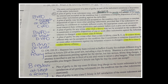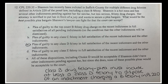Shannon has been recently indicted in Suffolk for multiple drug felonies under Article 220 of the Penal Law, including a class B felony. The best possible plea bargain can be a plea of guilty to any class D felony in full satisfaction of the recent indictment and other indictments. Pleas A and B would be acceptable but they're not the best option for her — that's why the answer is C.